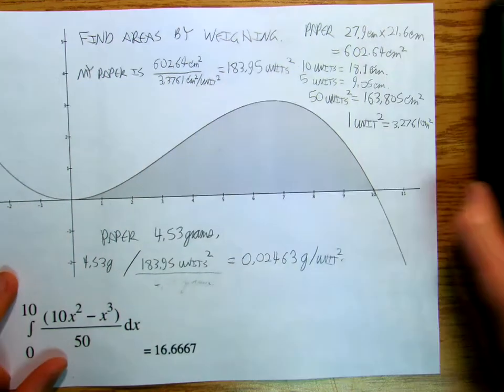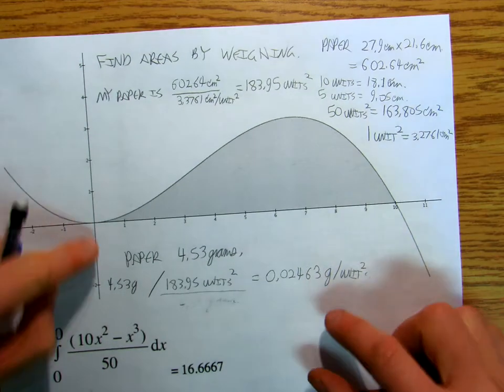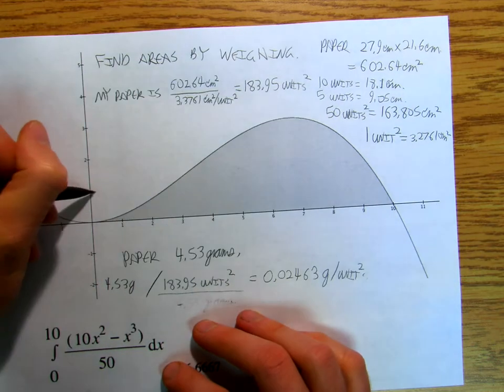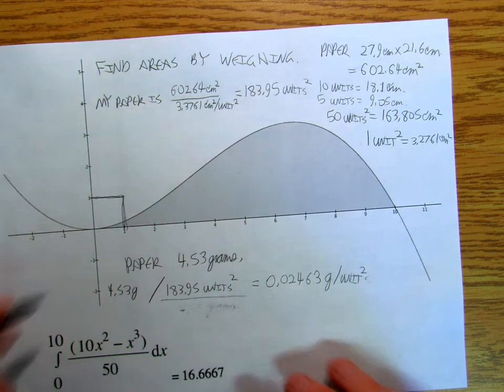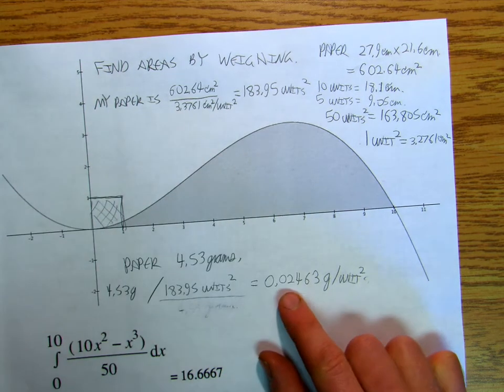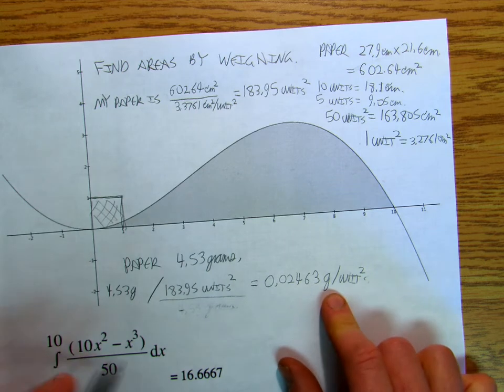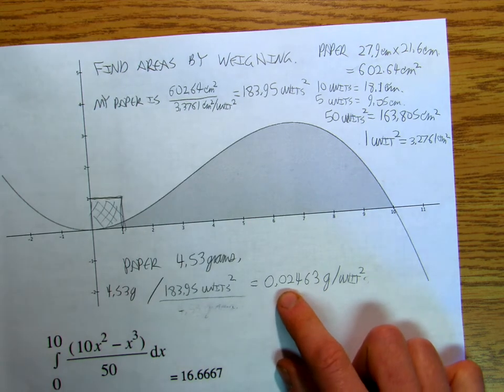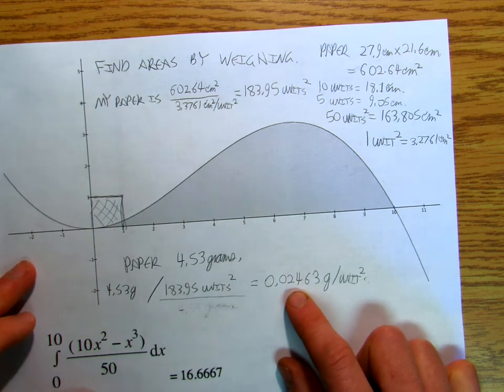Okay. I hope you follow me. What I'm saying is that on this sheet of paper one unit squared if I took that and cut it out and weighed it, that should hopefully weigh 0.02463 grams per unit. Now that's kind of at the edge of my scale so it's probably not going to work out all that well.